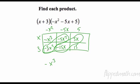If you remember, like terms are generally right here diagonal. So I have negative x³, negative 3x² and negative 5x² is negative 8x², negative 15x and 5x is negative 10x plus 15.